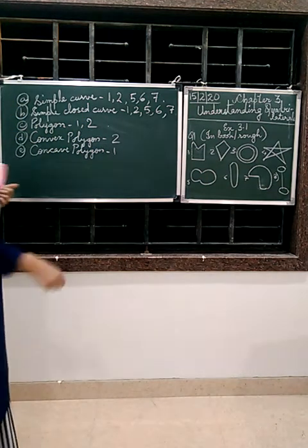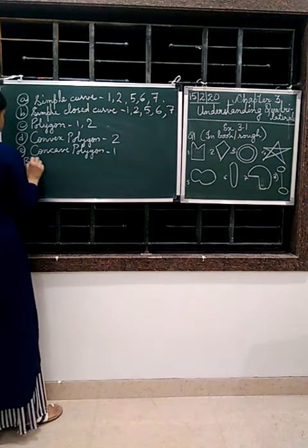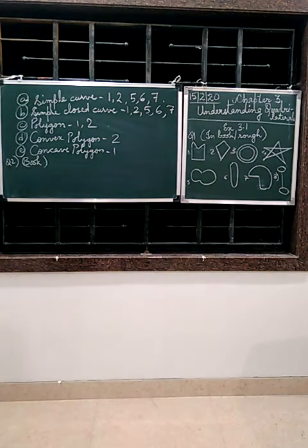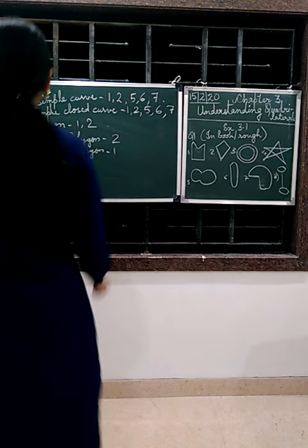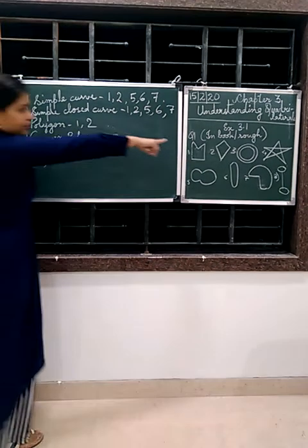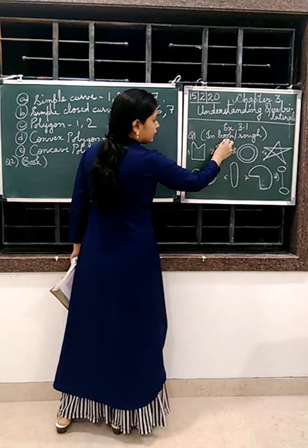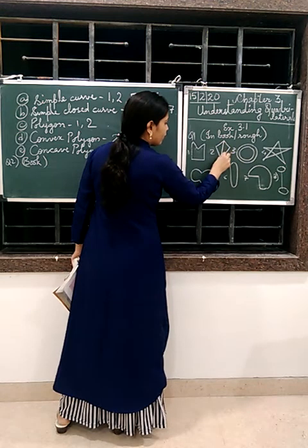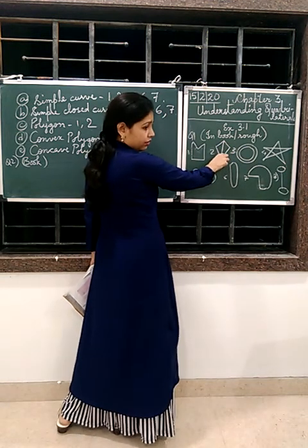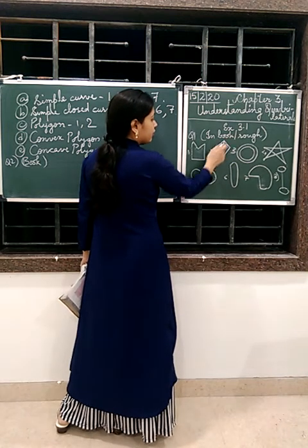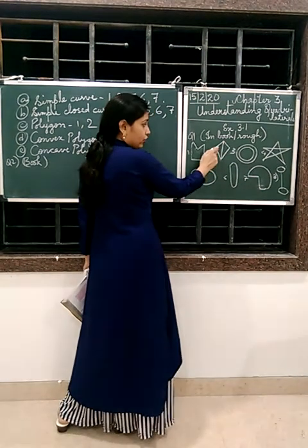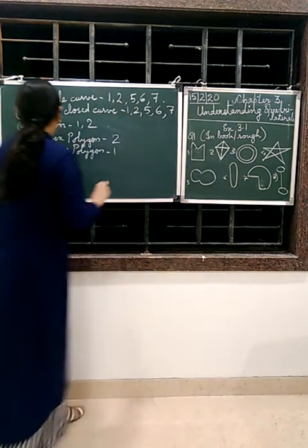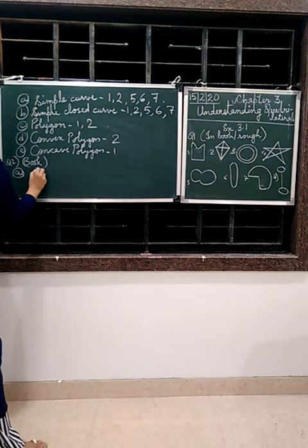So this completes question number 1, which we are going to do in book. And question number 2 also we are going to do in book. How many diagonals does each of the following have? Convex quadrilateral. What is a diagonal? Which align segment from one vertex to another, that to two non-consecutive vertices. Means it is going to its opposite vertex. It will not go to its consecutive vertex. Similarly here, one more. So how many? Two. So answer is two.